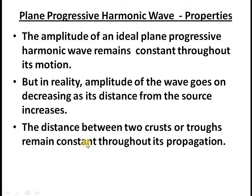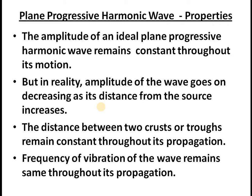Another important concept: the wave should always have crests and troughs. The crest is the point of highest amplitude and the trough is the point of lowest amplitude. The distance between two adjacent crests, or two adjacent troughs, is known as the wavelength, and that wavelength should always remain the same as the wave propagates. The frequency of vibration also remains the same throughout propagation in a single medium. When a wave moves from one medium into another, parameters like wave speed and amplitude may change, but within a single medium, wavelength is constant for a plane progressive harmonic wave.